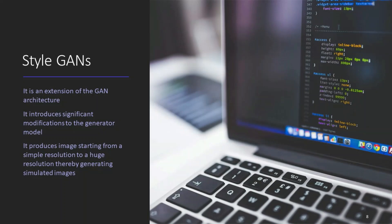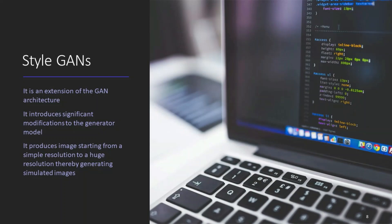Now we will see one variation of the GAN architecture — that is StyleGAN. It is an extension of the GAN architecture that introduces significant modifications to the generator model. It produces images starting from a simple resolution up to a huge resolution, thereby generating simulated images. StyleGAN features a mapping network to map points in latent space to an intermediate latent space, and uses that intermediate latent space to control style at each point in the generator model. Noise is also introduced as a source of variation at each point in the generator model.